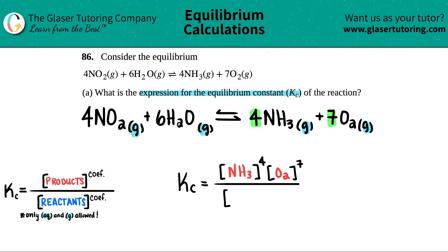So this would be the concentration of NO₂ and that would be raised to the fourth because there's a 4 in front of here. And then times by the concentration of H₂O.